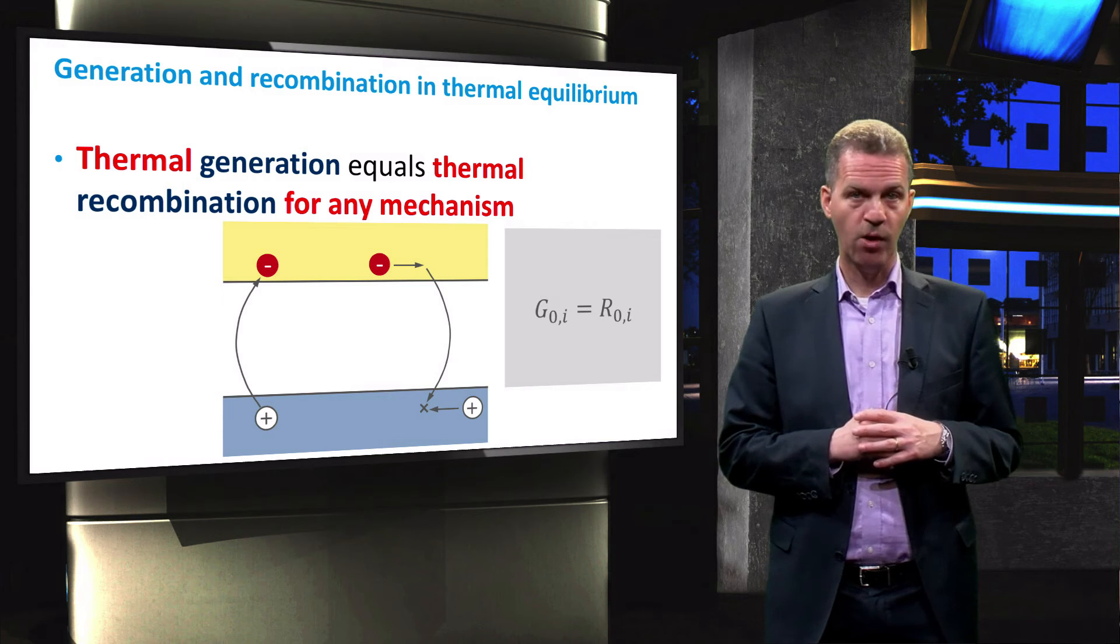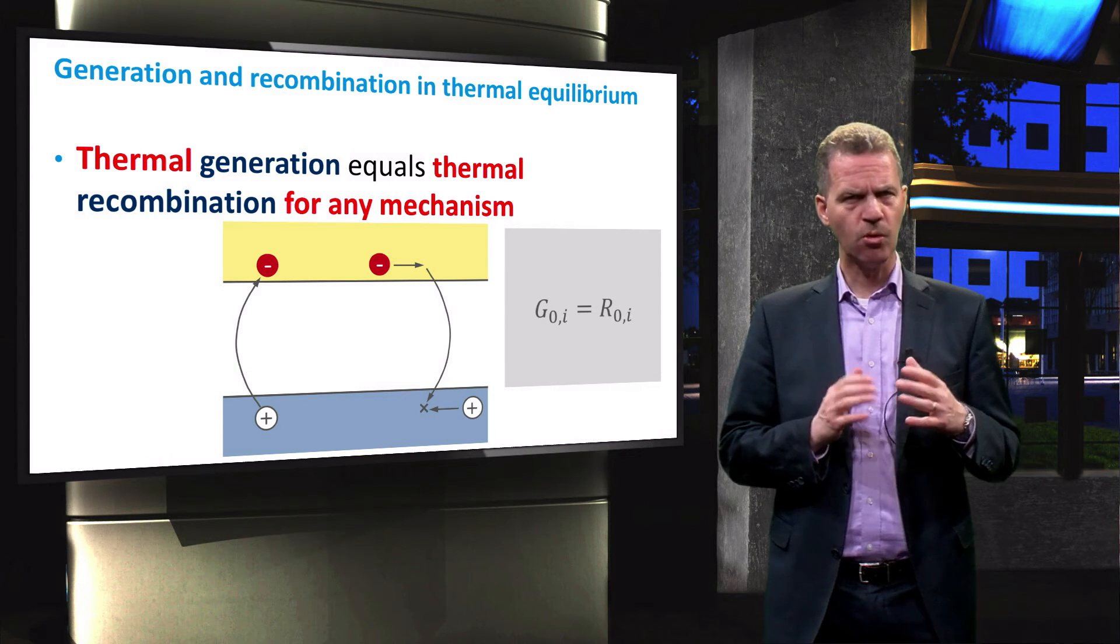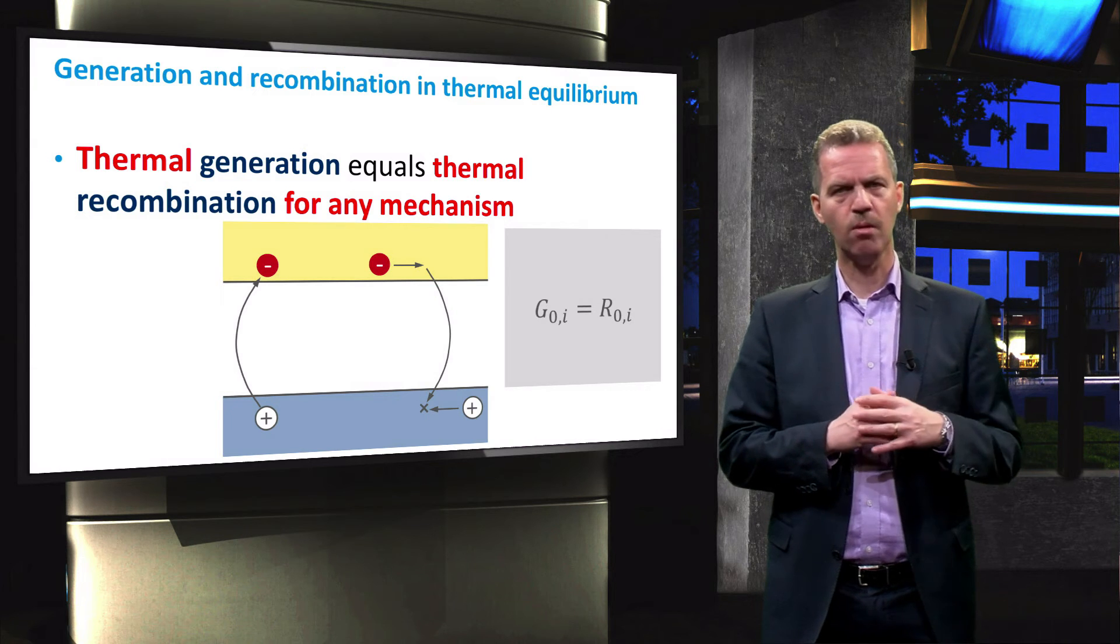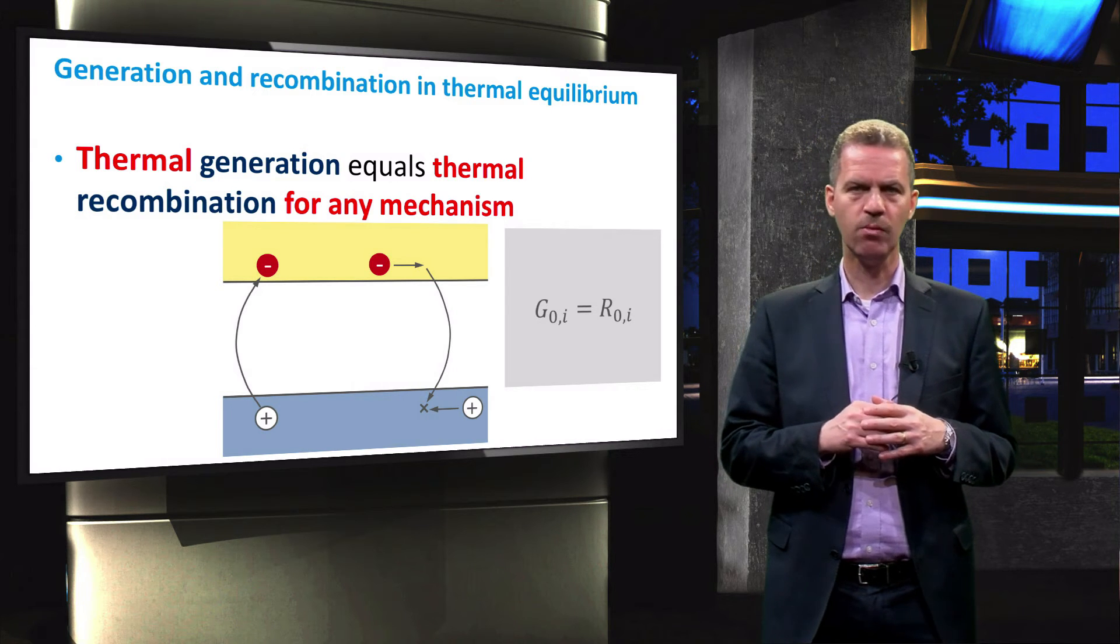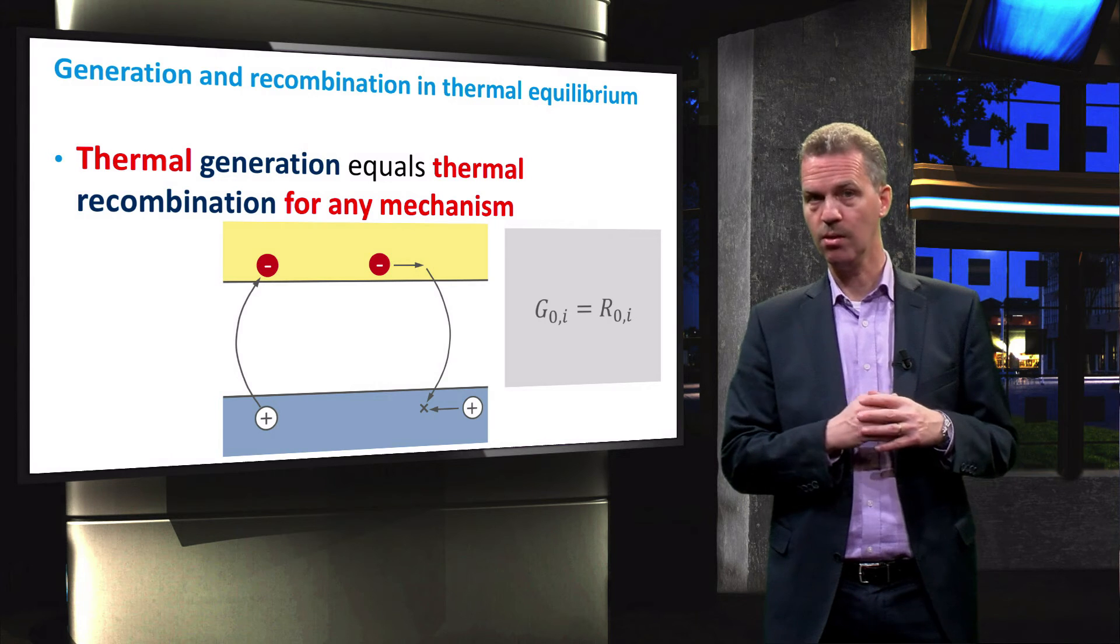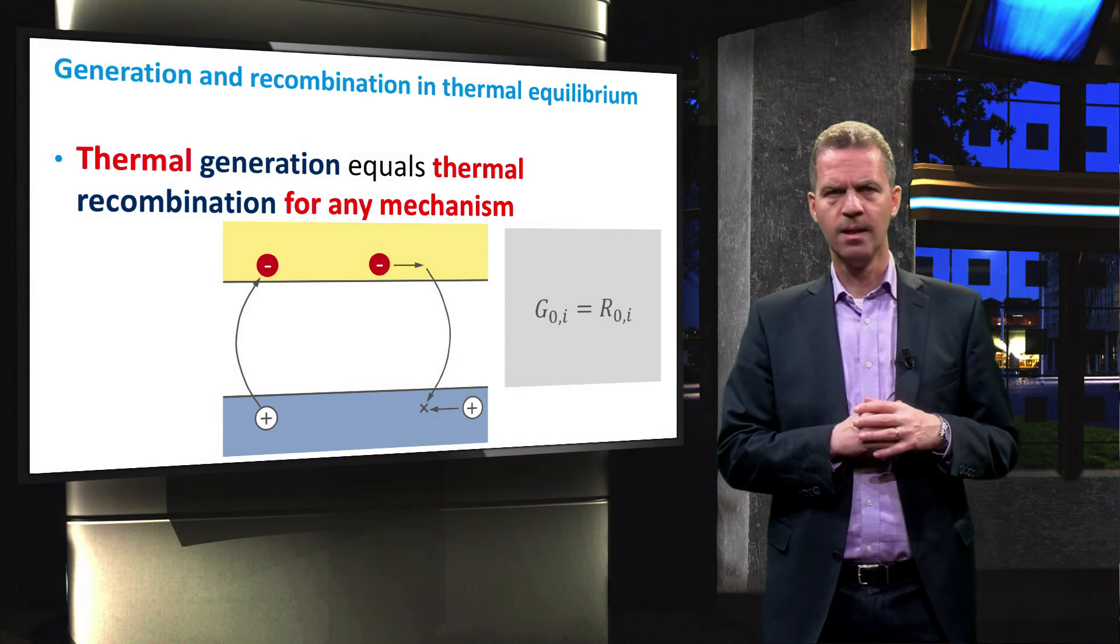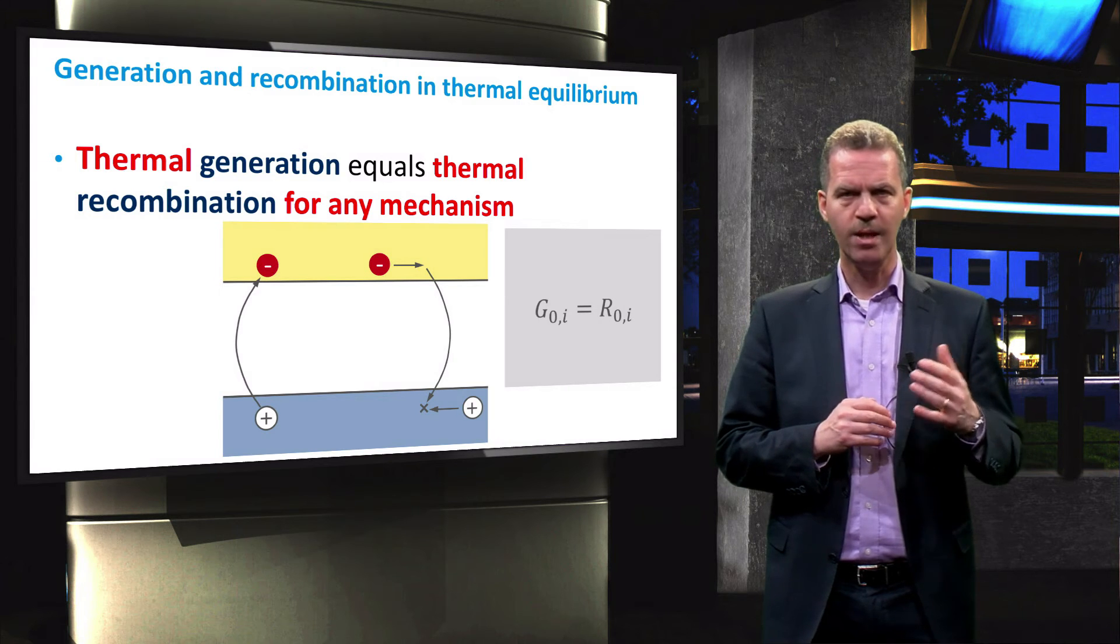In fact, we can take this further and state that based on the principle of detailed balance, the rate for each recombination mechanism is equal to an associated generation rate. It is important to realize that this is the case for thermal equilibrium.